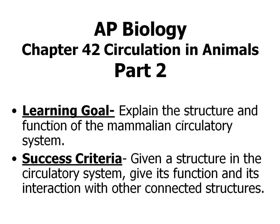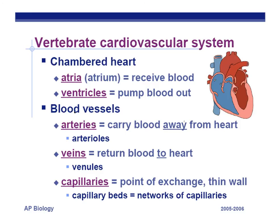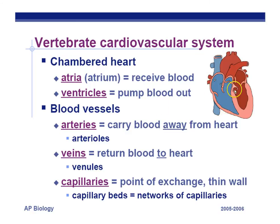AP Biology, Chapter 42, Circulation, Part 2. You do need to know this, so let's write this down. Vertebrates' cardiovascular systems — we have a four-chambered heart. The atria (plural for atrium) is the part that receives the blood, located on the right-hand side of the heart. This is the patient's right, not your right — it's the opposite of your right and left. The ventricles pump blood out and they're on the bottom. So we have atria on top and ventricles on the bottom, pumping blood out at various locations.